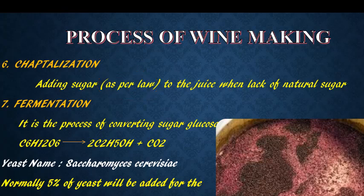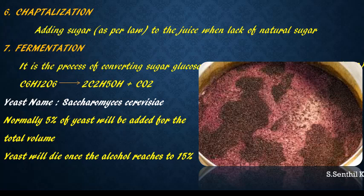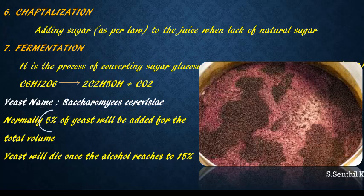The next step is fermentation, which is a very important step. In this step, the glucose content in the grape juice is converted into ethyl alcohol and carbon dioxide by adding yeast. The yeast added is called Saccharomyces cerevisiae. Normally five percent of it is added to the grape juice, and the yeast will die once the alcohol percentage reaches 15%.